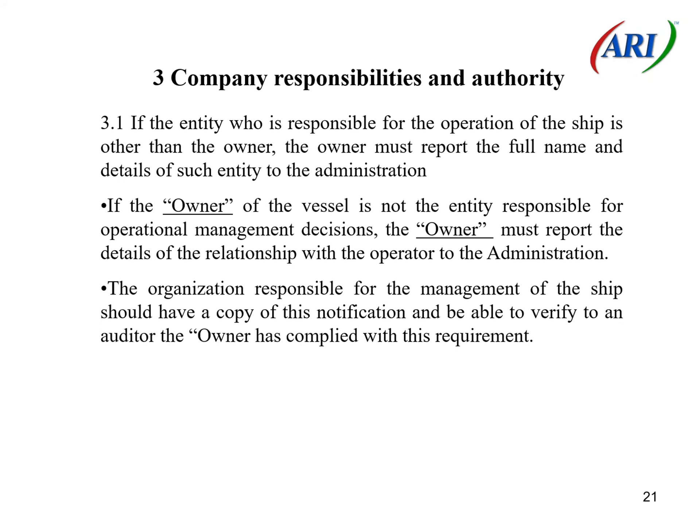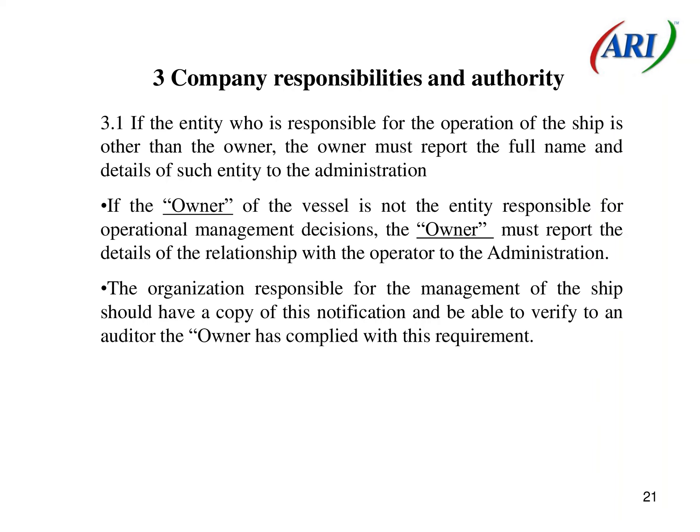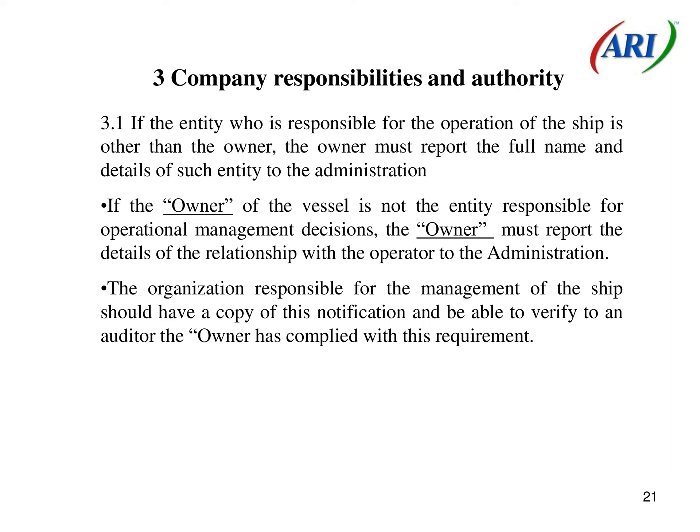Section 3: Company Responsibilities and Authority. 3.1 If the entity who is responsible for the operation of the ship is other than the owner, the owner must report the full name and details of such entity to the administration. If the owner of the vessel is not the entity responsible for operational management decisions, the owner must report the details of the relationship with the operator to the administration. The organization responsible for the management of the ship should have a copy of this notification and be able to verify to an auditor that the owner has complied with this requirement.